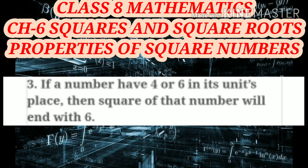Now children, we move to the next property of square numbers. If a number has 4 or 6 in its unit place, then the square of that number will end with 6.